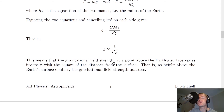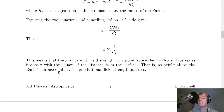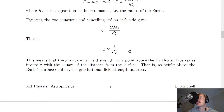The gravitational field strength at a point above the Earth's surface varies inversely with the square of the distance from the surface. That is, as height above the Earth's surface doubles, the gravitational field strength quarters. In simpler terms, as the height above the Earth's surface increases, the gravitational field strength decreases.